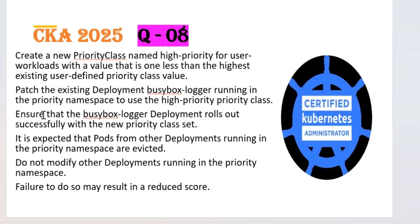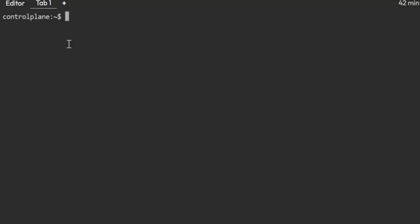You can monitor that in your exam — just check the pods of other deployments in the priority namespace. Also, the question says we don't need to modify any other deployments running in the priority namespace. If you make any modifications to other deployments running in the priority namespace, your score will be reduced. So make sure you are just creating the priority class, updating the deployment with it, and rolling out the deployment — that is the only requirement.